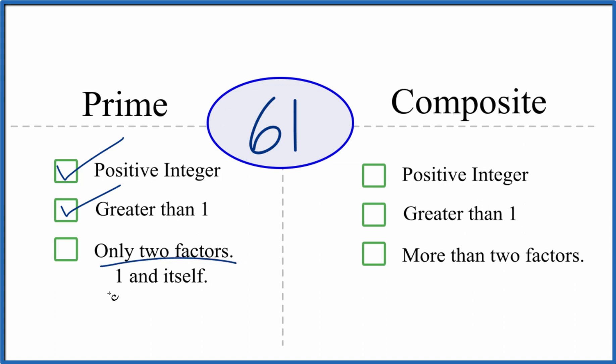Now there are only two factors, 1 and 61, that go evenly into 61.